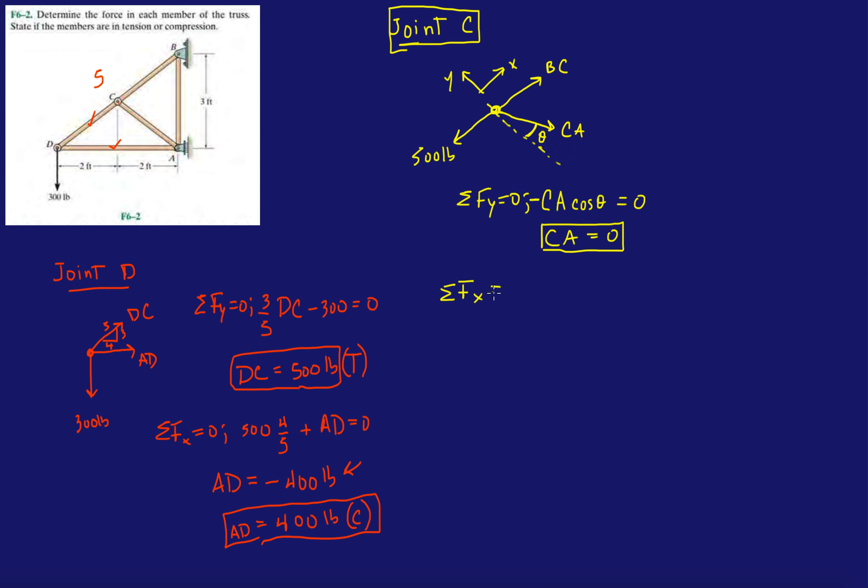Now, if we do forces in the X, right? This is zero, so that's gone. We have minus 500 plus BC equals zero.